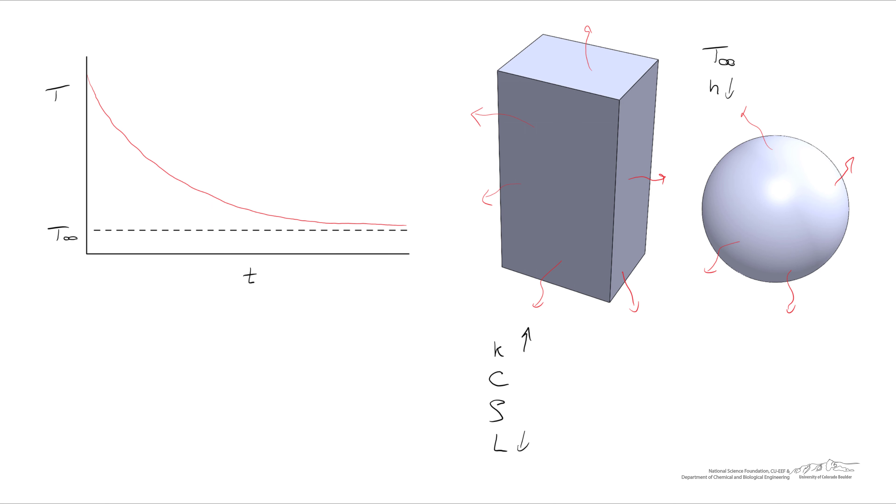And the third condition that has to be true is that the heat transfer coefficient is relatively small. So we don't want to add heat too rapidly or remove heat too rapidly from the exterior of the object, because that doesn't give enough time for the heat to diffuse uniformly throughout the object.